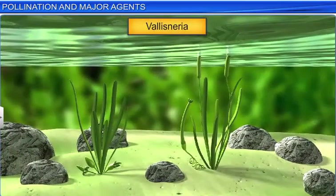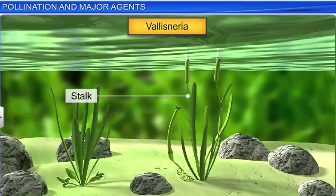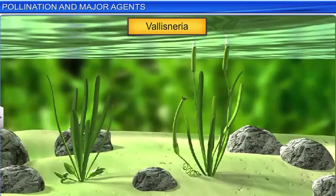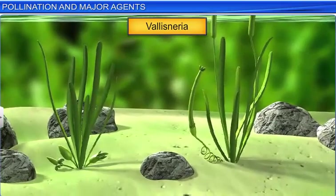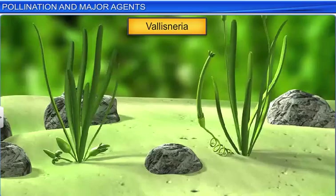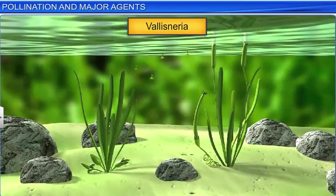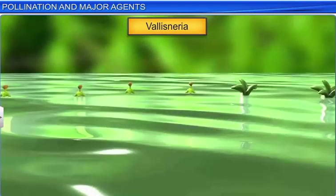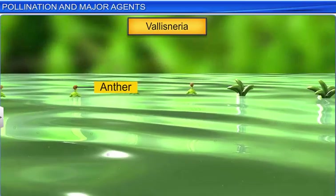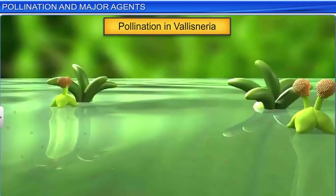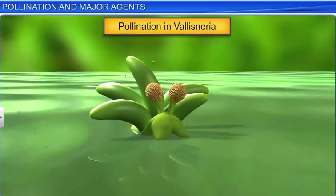In Vallisneria, for example, the female plant produces a long-stalked female flower that reaches the surface of the water. The male plant, on the other hand, remains submerged in water, where it produces several tiny floral buds. Upon maturing, the buds rise to the water's surface and open up to expose the anthers. Pollen released from the anthers is carried by water currents, where some of them eventually come in contact with the stigma.